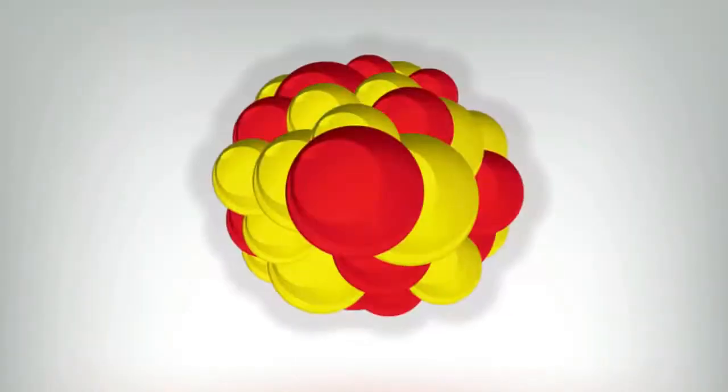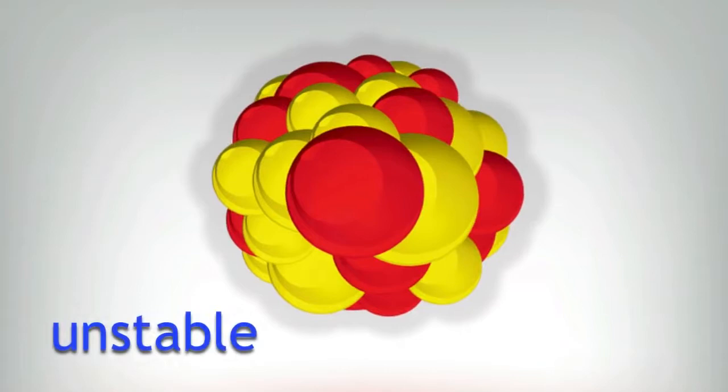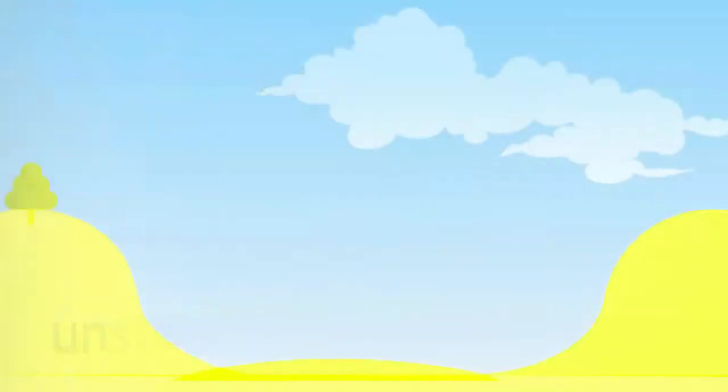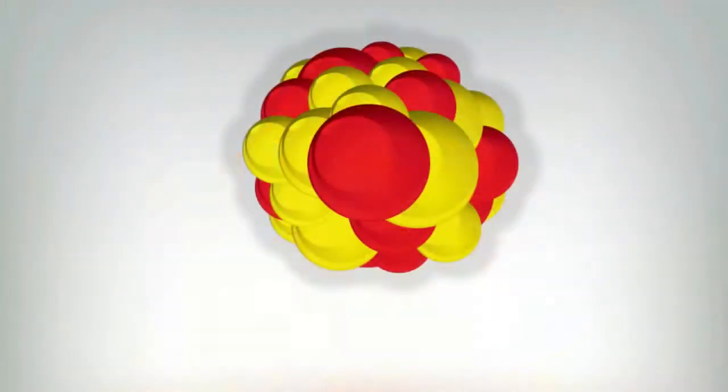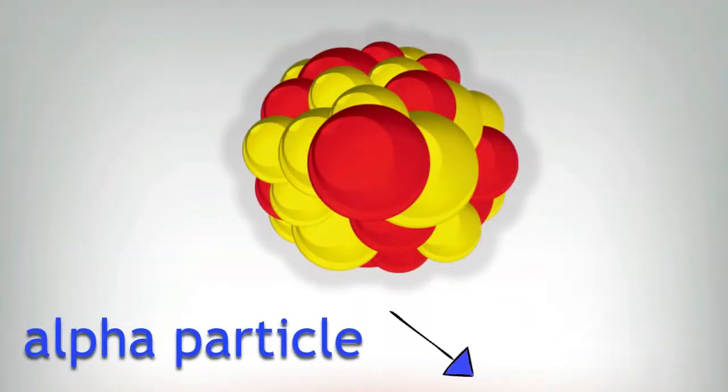When a nucleus is very big, it becomes unstable. It's a bit like when you build a sand castle. And when you get a really big sand castle, the last bit of sand just keeps falling off. That last bit of sand is a bit like an alpha particle. You put it in, and eventually bang, it comes shooting out.